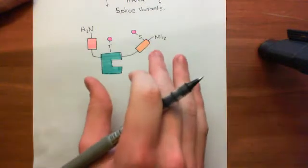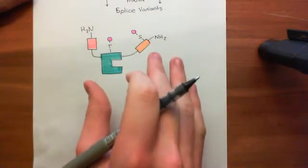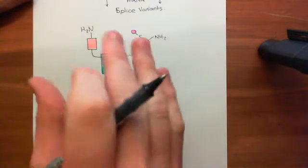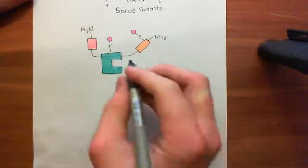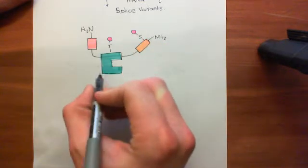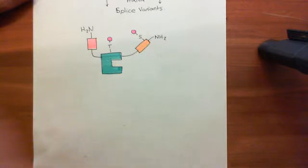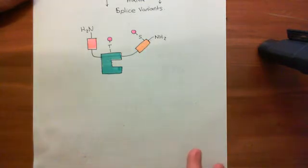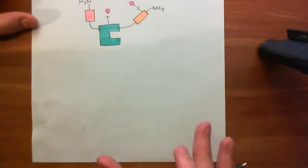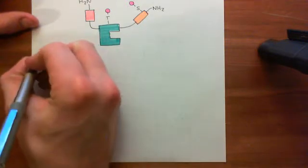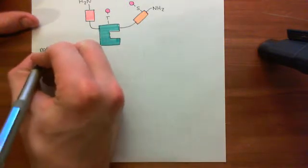We've now got activated protein kinase B, or AKT, which is a serine-threonine kinase once active. This is the catalytic domain of protein kinase B, and it is now going to go into the cytoplasm and activate a complex of proteins known as mTORC1.